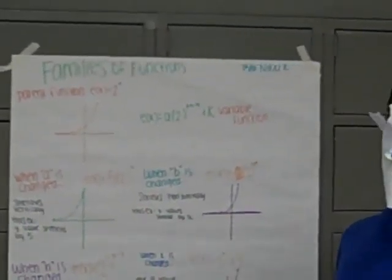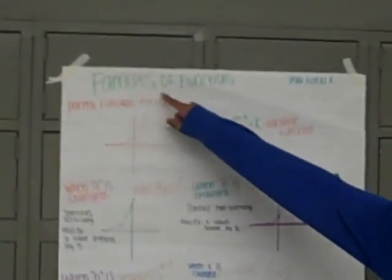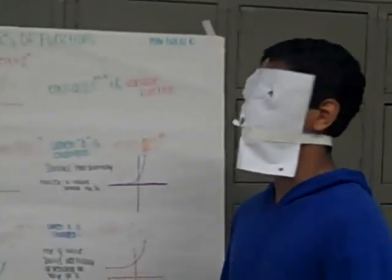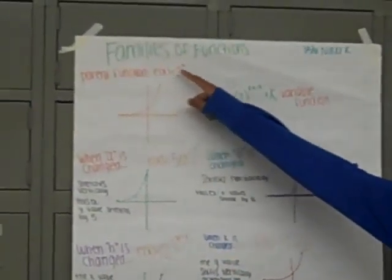Alright, so in our math class today we did a project on the families of functions. We were assigned the parent function e to the x equals 2 to the x. This is an exponential function, and the graph looks exactly like this.